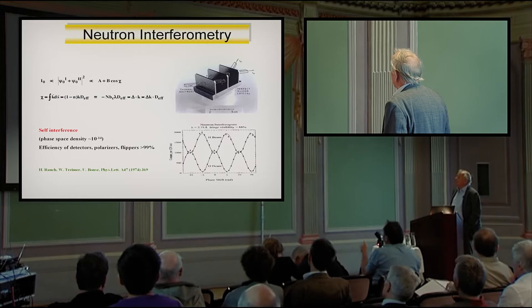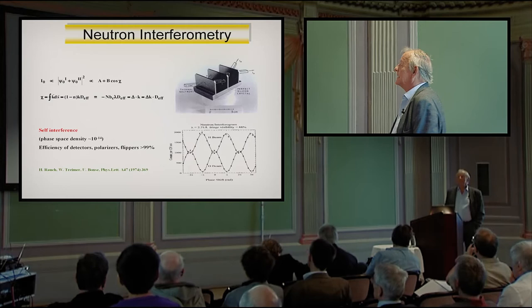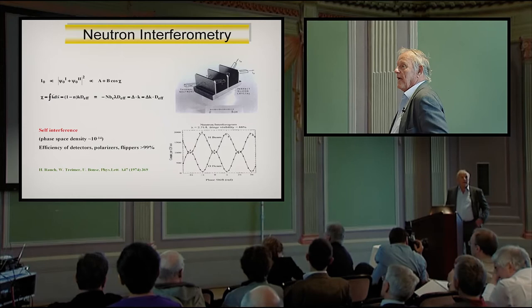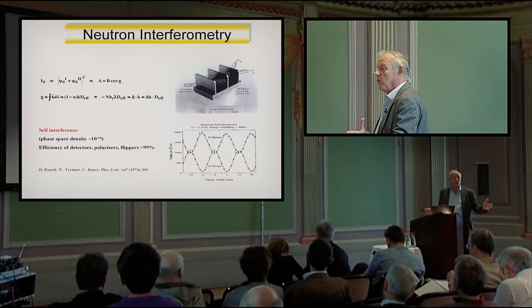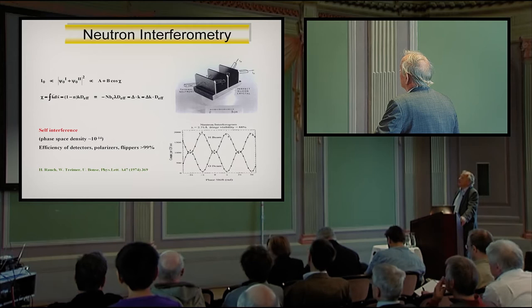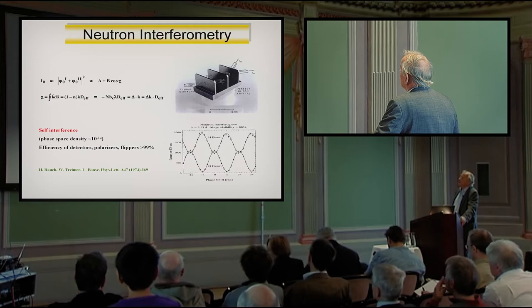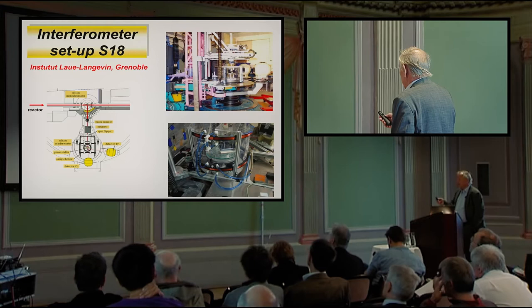I should also mention that we are always in the regime of self-interference. At the time, there is only one neutron within the apparatus. When you calculate, you can even say that the next one is not yet born, it is still in the fuel of the reactor. We have very high efficiency for detectors, polarizers, and spin flippers, and so on.